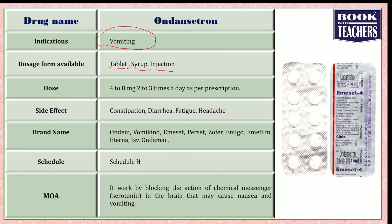The brand names and marketed preparations available for ondansetron include Ondem, Vomikind, Inset, Perset, Zopher, Imigo, Imiflame, Atterna, ISV, and Onjamac. These are the famous brands for ondansetron. This is a Schedule H drug.